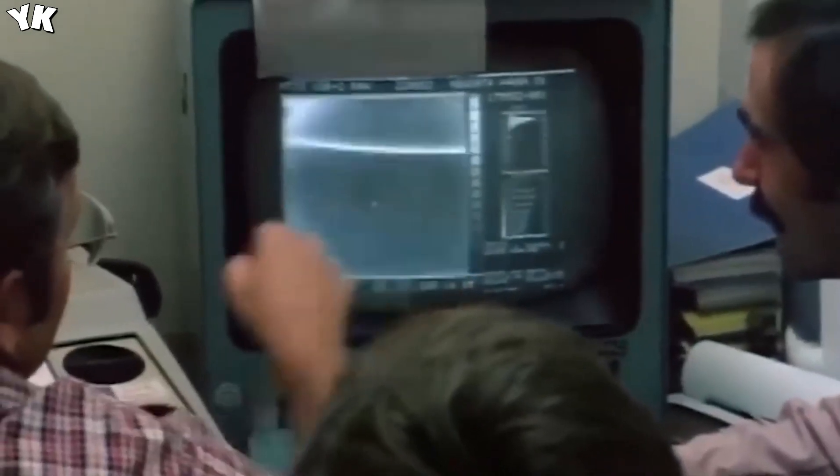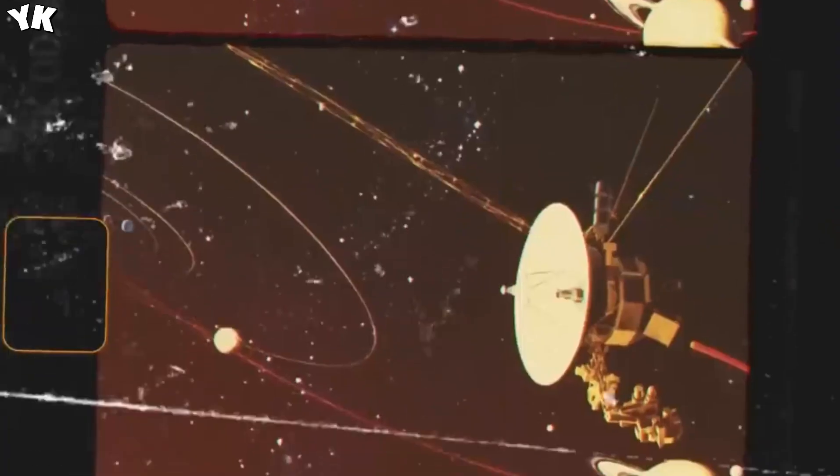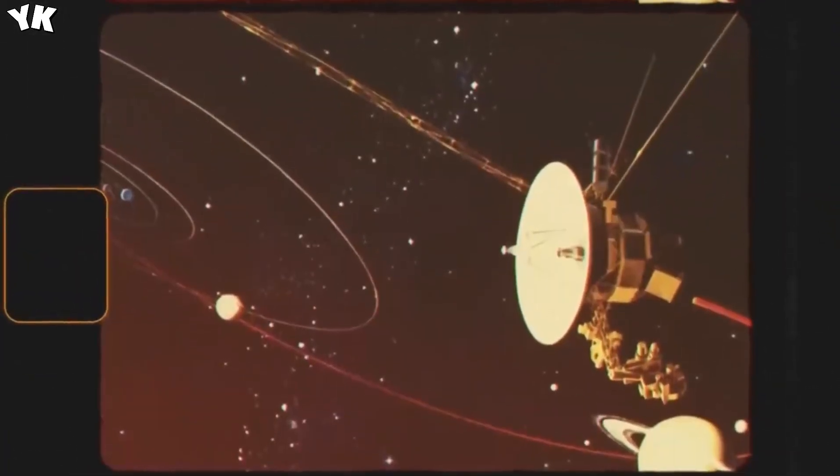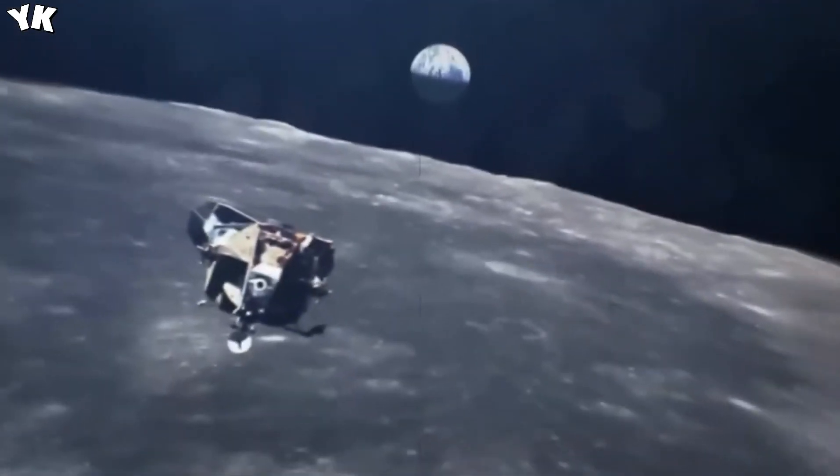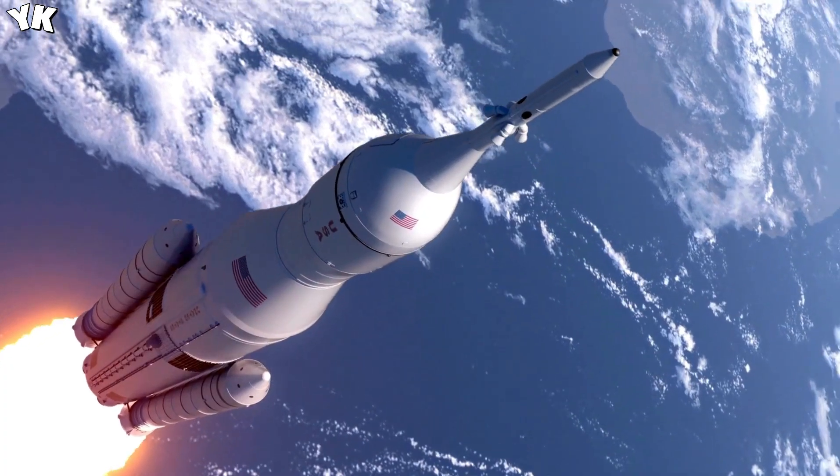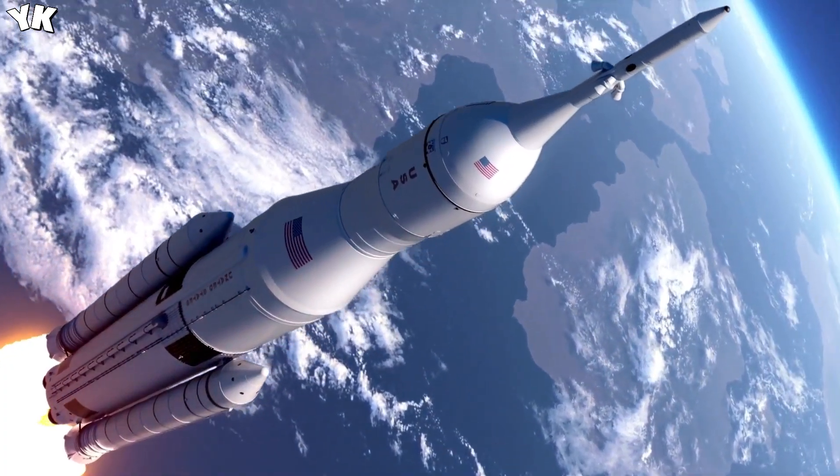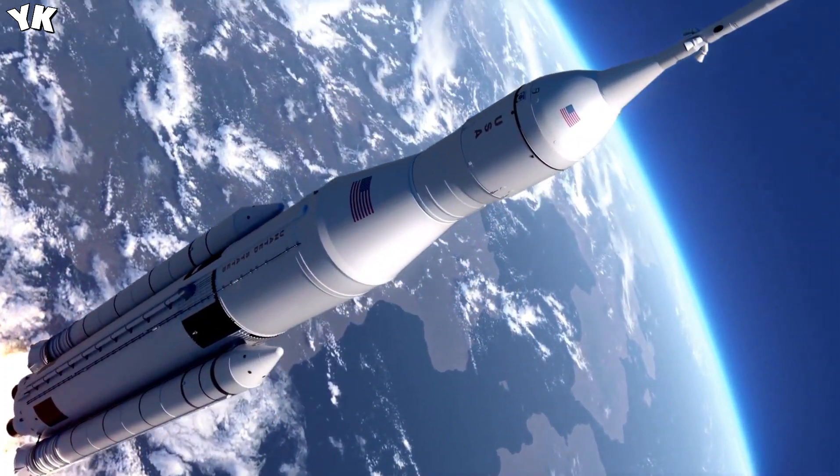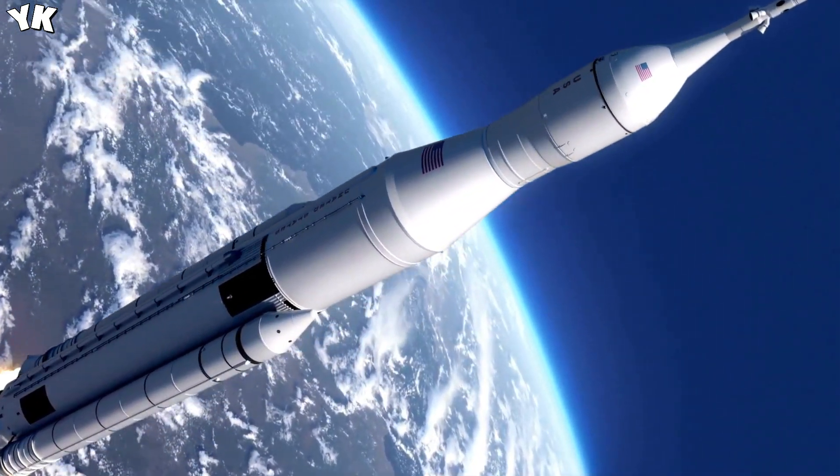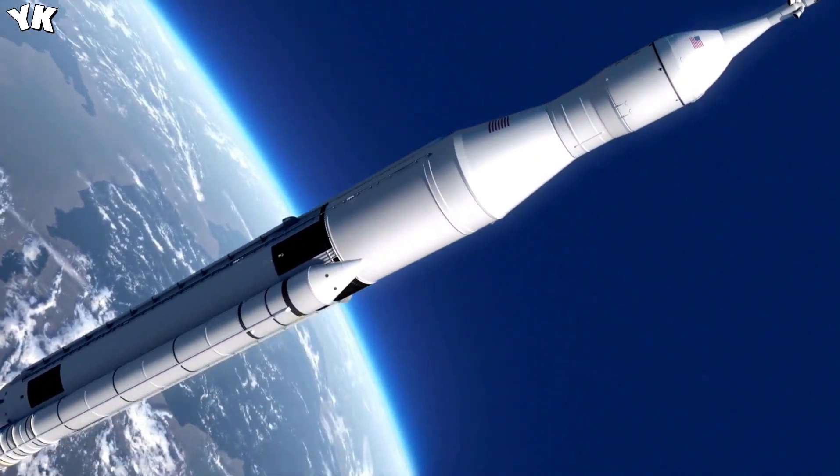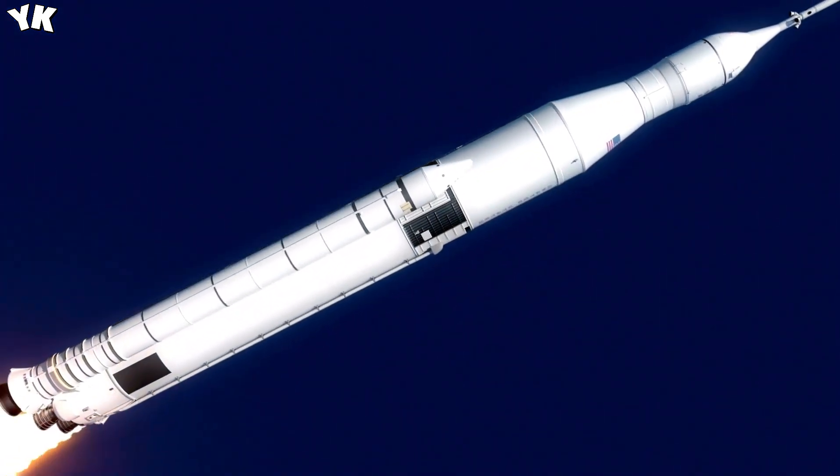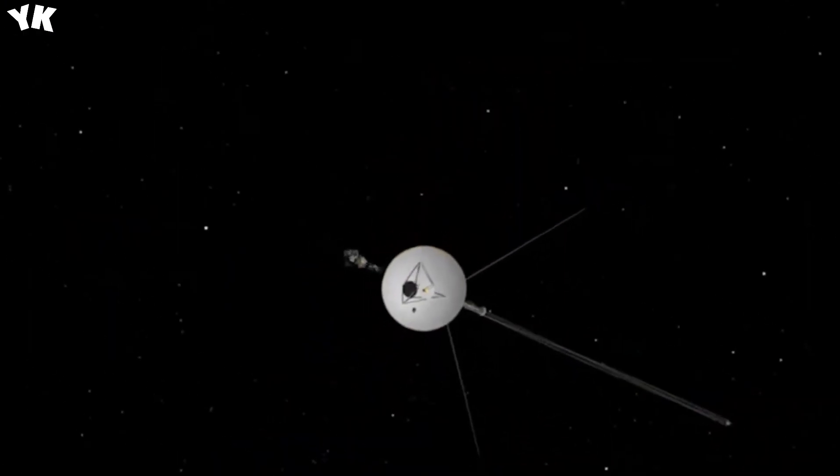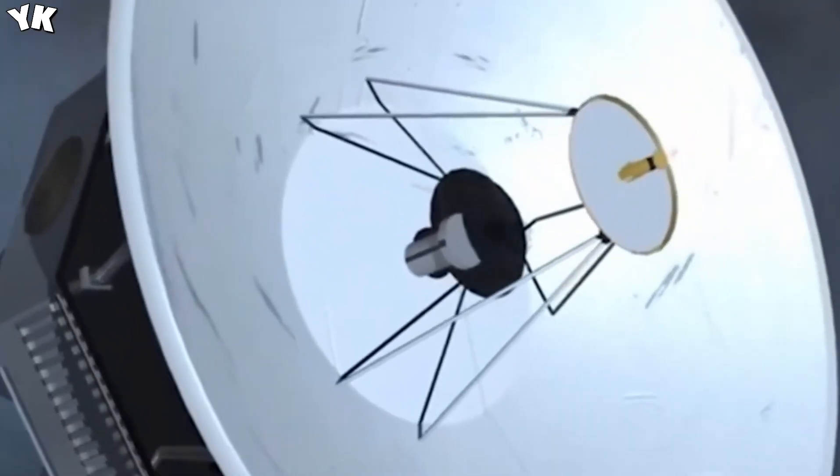What truly distinguishes the Voyager probes is their meticulous design. As stable platforms with a rotation rate over 15 times slower than the hour hand of a clock, these spacecraft were engineered to minimize visual blurring as they captured images and data while hurtling through the vastness of space. Even before their encounters with the outer planets, their impressive imaging capabilities began to amaze scientists and the public alike. Months before reaching Jupiter, the Voyager spacecraft began transmitting images of this gas giant, captivating audiences at NASA's Jet Propulsion Laboratory.